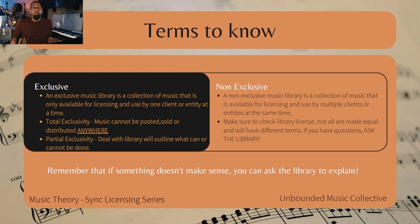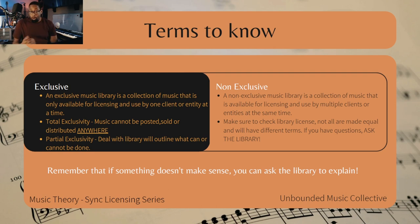The first is total exclusivity — music that cannot be posted, sold, or distributed anywhere, including YouTube, Distrokid, or any entity that sends your music out to Apple Music or anywhere. Then we also have partial exclusivity. Deals with libraries will outline what can or cannot be done.